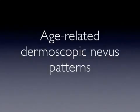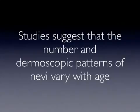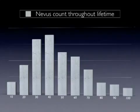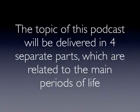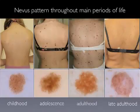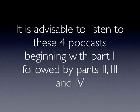In this podcast, we will speak about the age-related dermoscopic nevus patterns. Studies suggest that the number and dermoscopic patterns of nevi vary with age. In fact, nevus count increases from puberty until midlife and thereafter decreases. The topic of this podcast will be delivered in four separate parts, which are related to the main periods of life: childhood, adolescence, adulthood, and late adulthood. It is advisable to listen to these four podcasts beginning with part 1, followed by parts 2, 3, and 4.